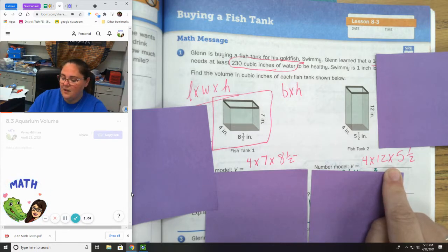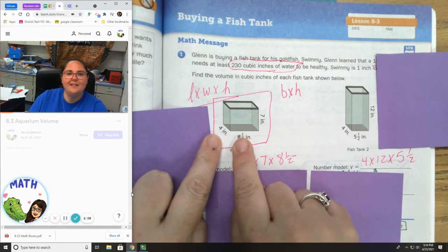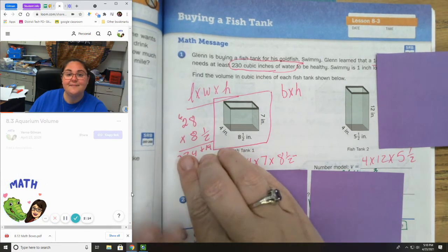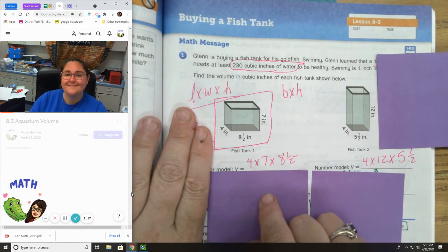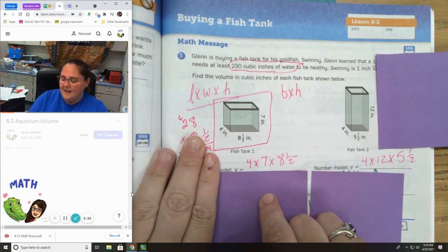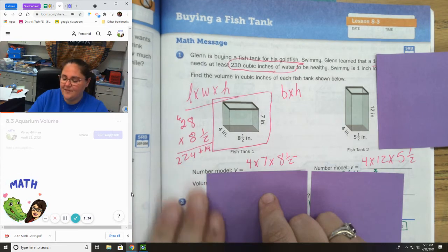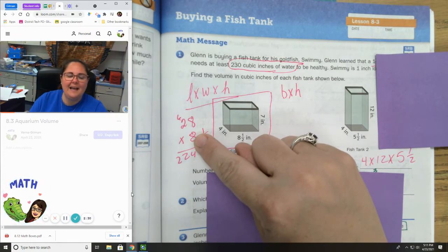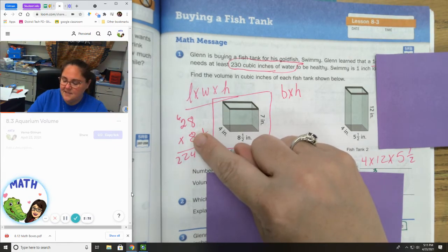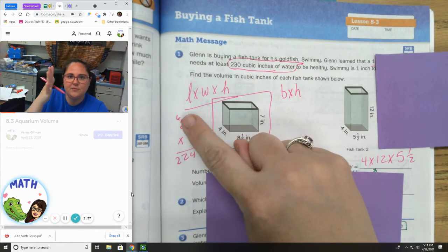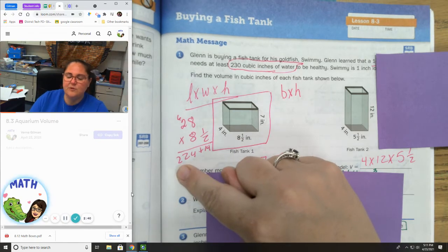Let's find the volume of this fish tank right here. Do the math. What is 4 times 7 times 8 and a half? I know 4 times 7 is 28 times 8 and a half. I'm going to start by multiplying by 8. 8 times 8 is 64, carry my 6. 8 times 2 is 16, 17, 18, 19, 20, 21, 22. So, 224.